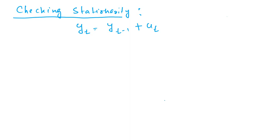In this video, I will take a couple of examples wherein we will check the stationarity of a time series model. The first example is: yt is equal to yt minus 1 plus ut. So yt depends on its first lag and there is an error term. The coefficient here is 1 — that is, 1 multiplied by yt minus 1.